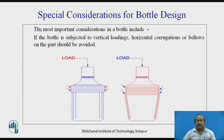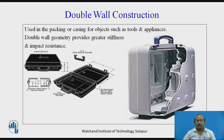The most important consideration is that if the bottle is subjected to vertical loading, horizontal corrugation or bellows on the part should be avoided. Double wall construction is used in packaging or casing for objects such as tools and appliances — double wall geometry provides greater stiffness and impact resistance.